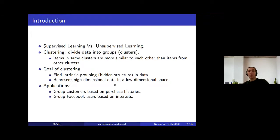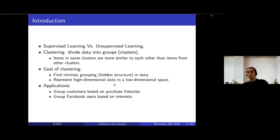Today we're discussing clustering, which falls under unsupervised learning. In machine learning there are basically three kinds of problems: supervised, unsupervised, and reinforcement learning. The main difference between supervised and unsupervised is the existence of ground truth labels — in supervised learning, if we have a set of images we know what each image contains, if we have text we know the translation, and so on.